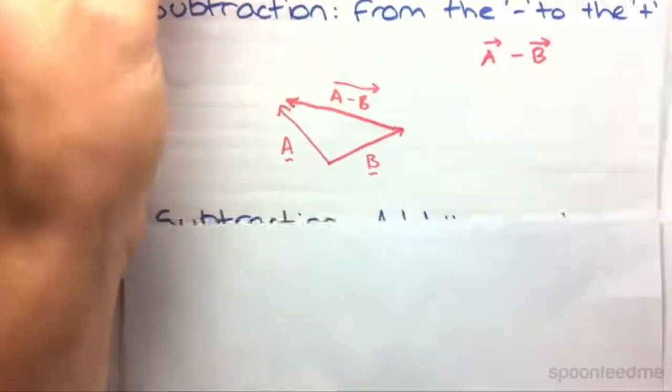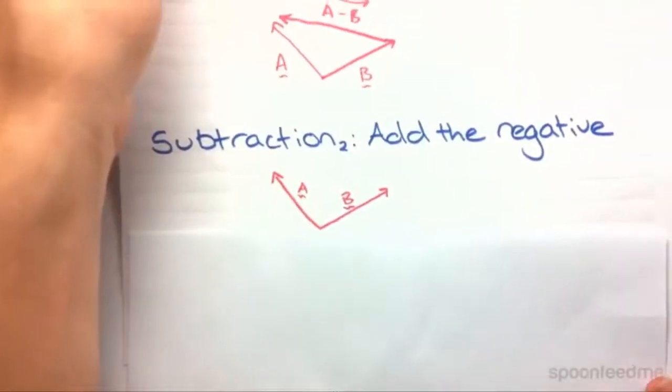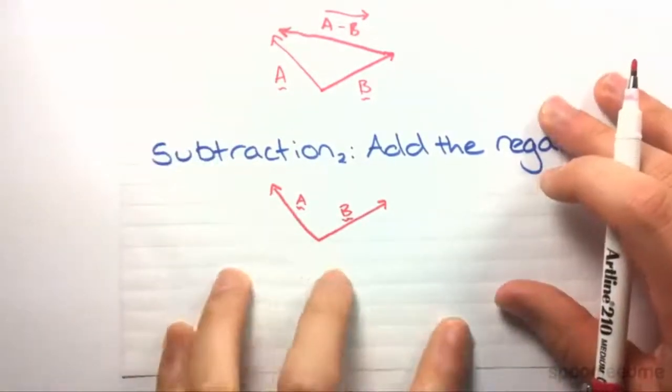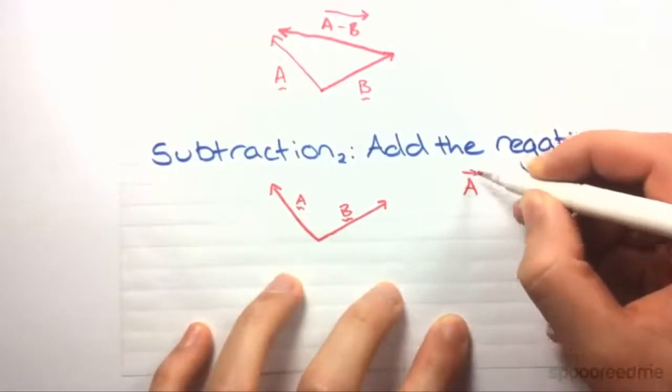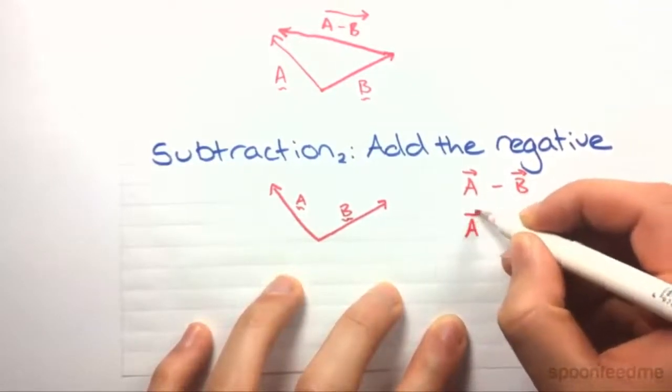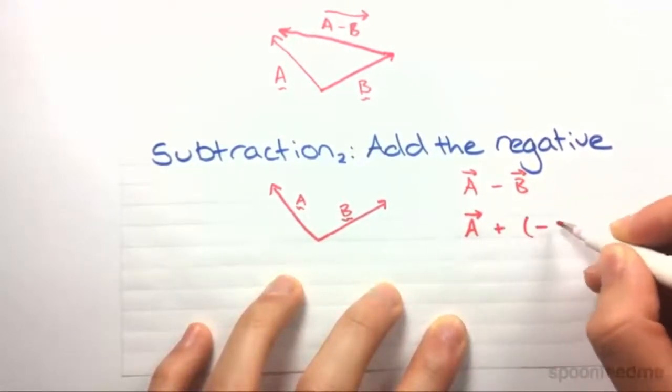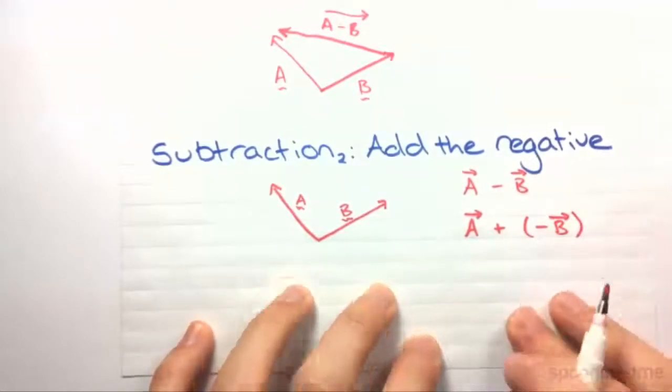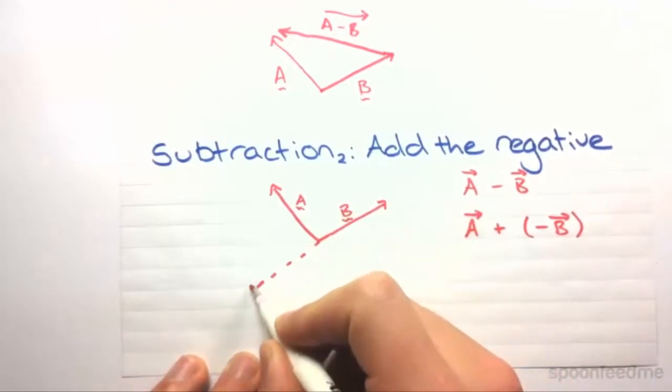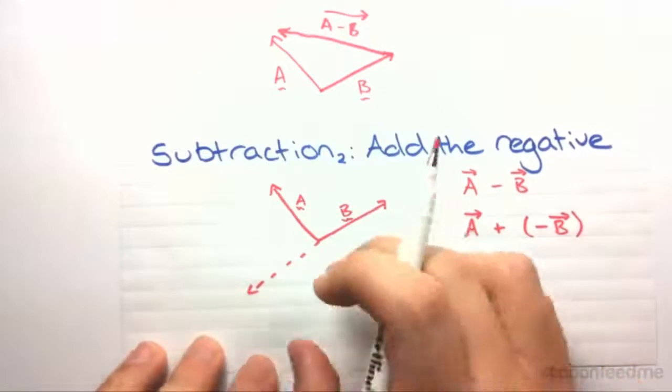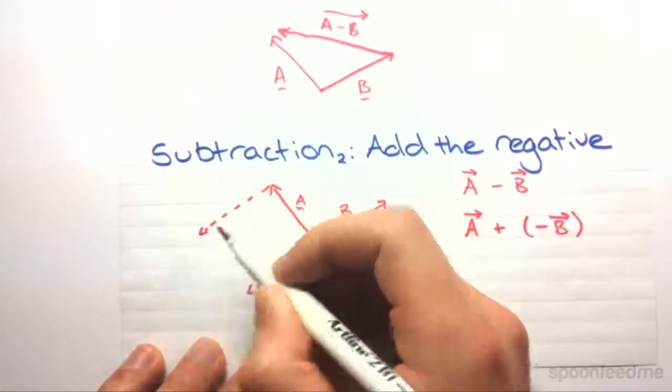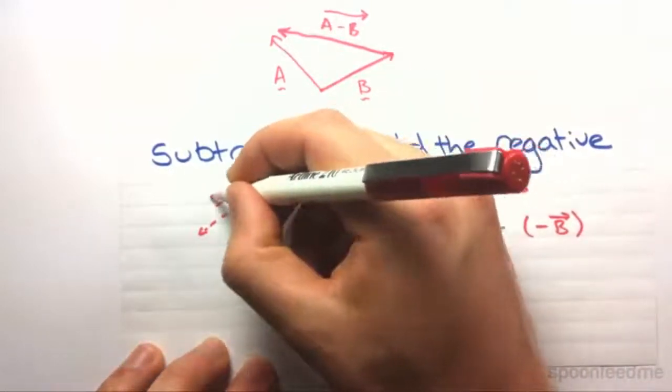Another way of doing this, of doing subtraction, is to add the negative. So we've got the same two vectors over here, and we want to find A minus B, only this time what we're going to do is we're just going to write it a little bit differently. So we're actually going to add the negative of the vector. Now the negative of the vector is just the opposite direction. Now we're going to put that, we're just going to move that up there, because you can move these vectors, doesn't really matter where they are. So that is actually the vector minus B.